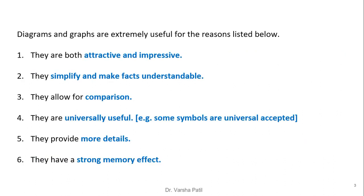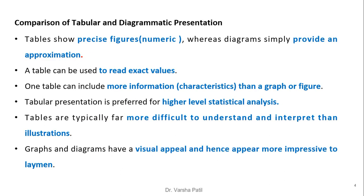Diagrams and graphs are extremely useful for the following reasons: they are attractive and impressive in nature, simplify and make facts understandable, allow comparison, and some symbols are universally accepted and useful. They provide more detail and have a strong memory effect. Comparing tabular and diagrammatic representation: a table shows precise numeric values whereas a diagram provides an approximation. One table may include more features than a graph, so graphs are mostly used for one or two features. Tabular presentation is preferred for higher-level statistical analysis, but graphs and diagrams have visual appeal and appear more impressive to laypersons.